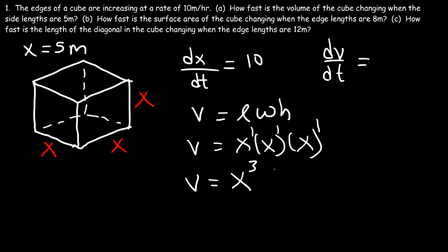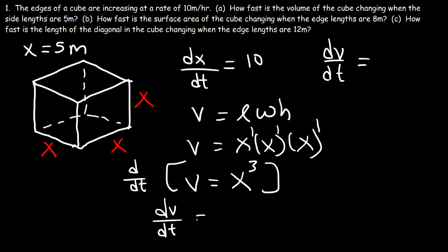Now that we've related V to x, we can differentiate both sides of the equation with respect to time. The derivative of V is dv/dt. And the derivative of x³, using the power rule, is 3x² times dx/dt. So that's the formula we need to use.